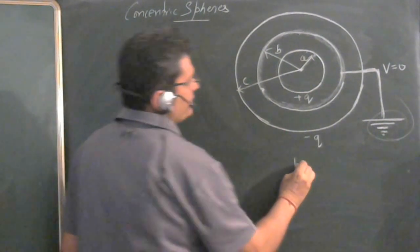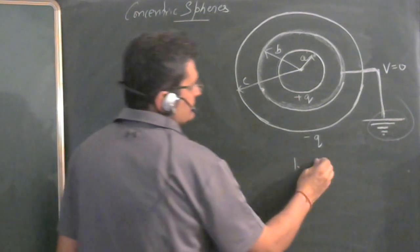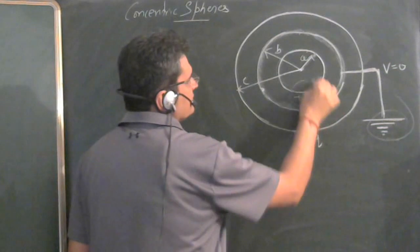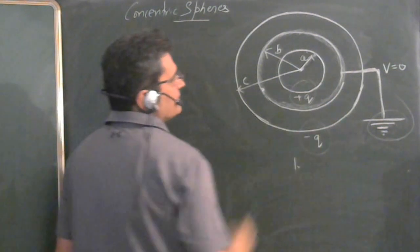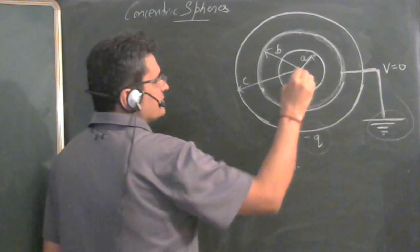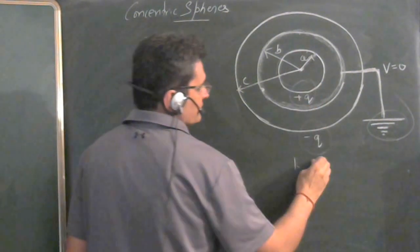Point number one: the charges on the isolated spheres will remain conserved. So it will be total charge on this will remain plus Q, total charge on this remain minus Q.